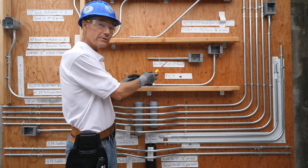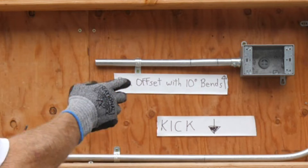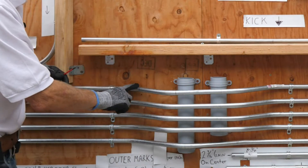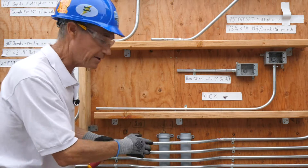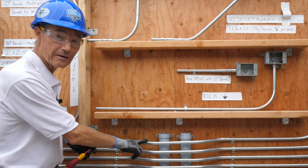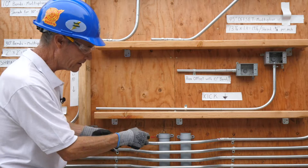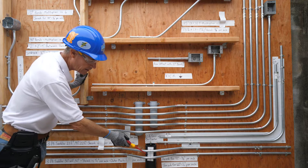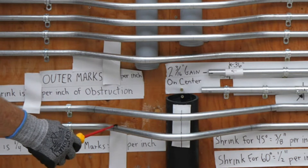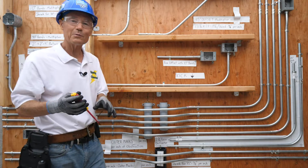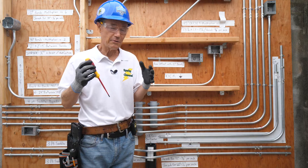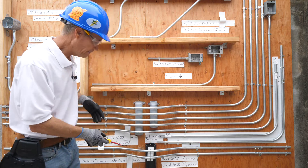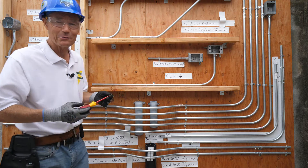How do you know what the multipliers are for 10-degree offset bends? How do you know what the shrinkage is for 10-degree offset bends? How do you know how far apart to put the marks on 30-degree offsets? To know that, you need to know what the multiplier is and how far the distance is. I'm going to help you memorize these various multipliers, shrinkages, and outer mark placements on three-point saddle bends.